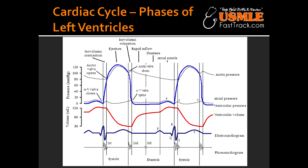Once the aortic valve opens, all the blood in the left ventricle starts releasing into the aorta, causing a reduction in the volume of the left ventricle. This is represented by number 2 — the systolic ejection phase — where all the blood is getting out of the heart and going into the aorta, causing the volume to reduce.